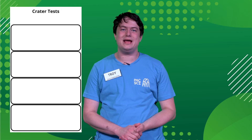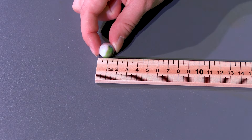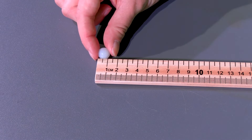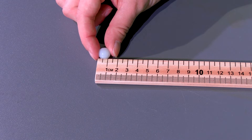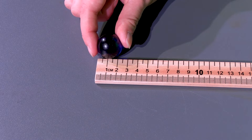To keep track of these variables, you're going to make a table in your science notebook. First, add four rows to your table labeled Marble 1, Marble 2, Marble 3, and Marble 4. Next, add three columns labeled Marble Diameter, 30 centimeter drop, and 60 centimeter drop. Measure the diameter of each of your four rocks or marbles in centimeters at the widest point. The smallest marble will be recorded as marble number one, then the next smallest is Marble 2, and so on. Record these measurements in the Marble Diameter column of your table. Pause here to create your table and add your marble diameter measurements.